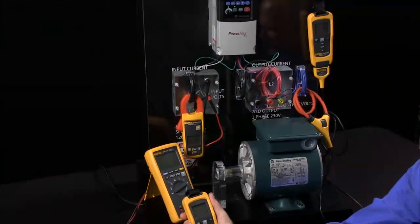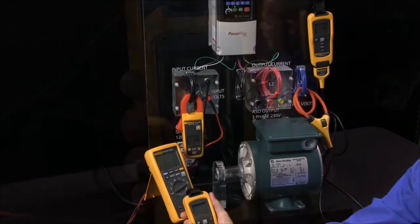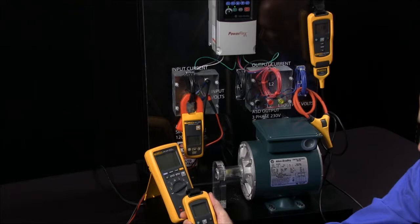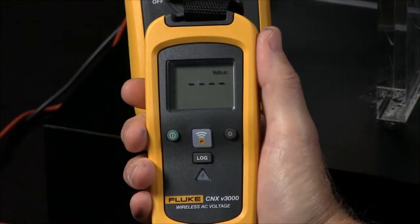So how do we configure the CNX wireless multimeter to read the data from its remote modules? Here we have a voltage module. The first thing that's important to do is make sure that you've turned on your remote modules and connected them to the circuit.